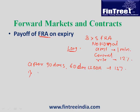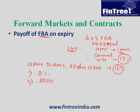Instead of remembering the formula, we can build some basic intuition. Step one: being long on an FRA means you have an obligation to borrow at 12%, whereas the rate in the market turned out to be 15%, so we have a benefit of 3%. Step two: convert this to an amount — 3% of 1 million is 30,000.